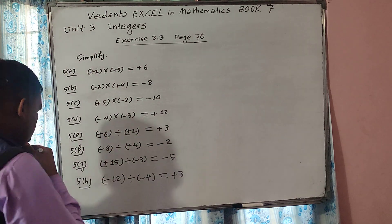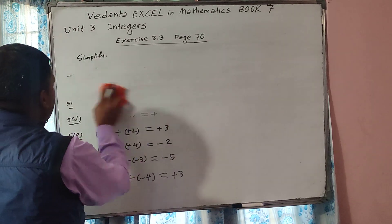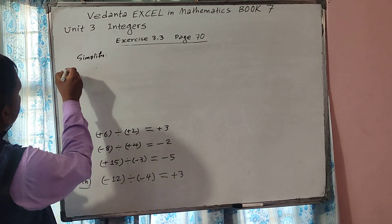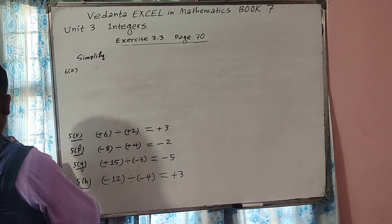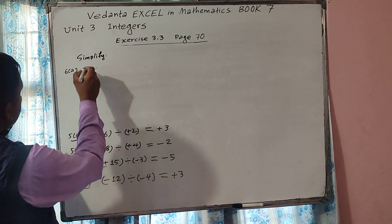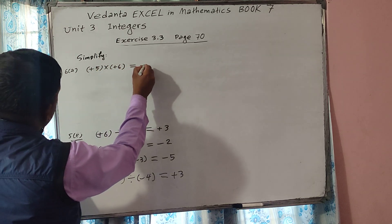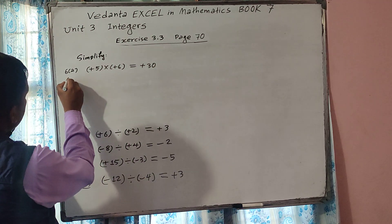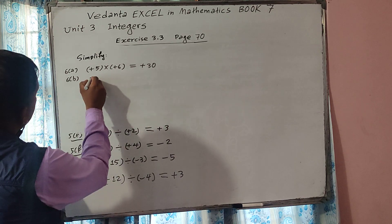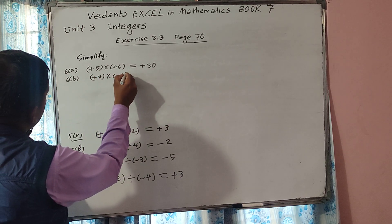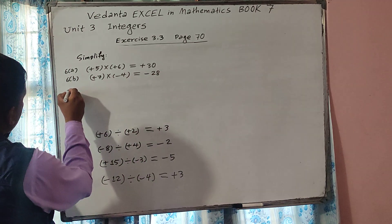Now we go to Question number 6, which is also about simplifying. 6A: plus 5 multiplied by plus 6. Plus into plus gives plus — 5 times 6 is 30, so plus 30 is the answer. Now 6B: plus 7 multiplied by minus 4. We know that plus into minus gives minus — 7 times 4 is 28, so minus 28 is the answer.